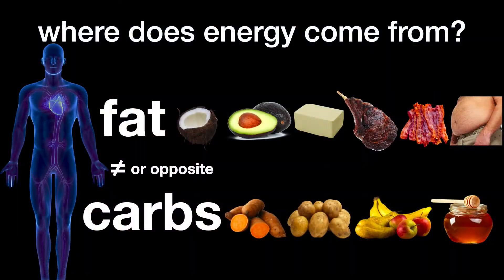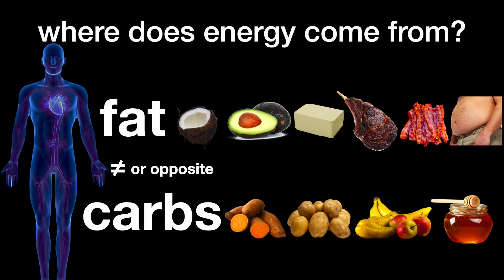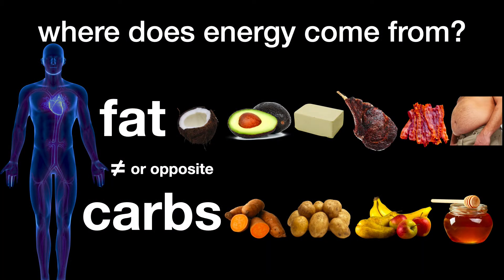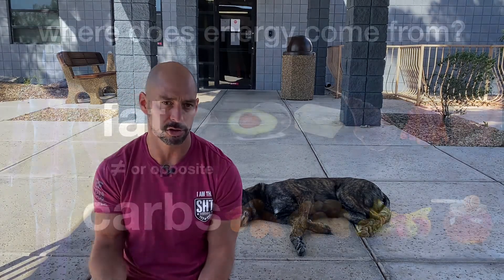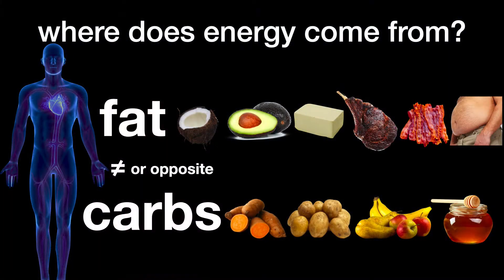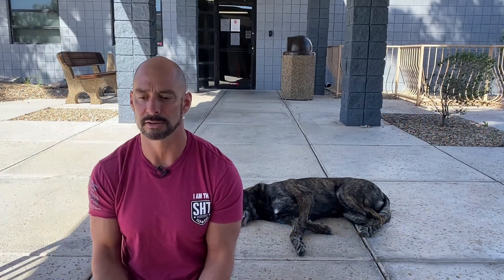The body can get energy from two main sources: fat and carbohydrates. By carbohydrates, we mean dominant sources of starch and sugar. We can get energy from fat — whether it's dietary fat from foods we're eating or excess body fat — and we can also get energy from carbohydrates, which includes starches, sugars, blood glucose, stored liver glycogen, or muscle glycogen.